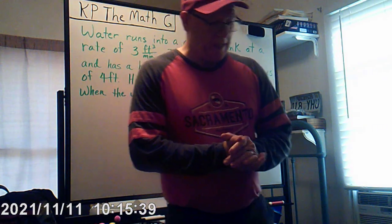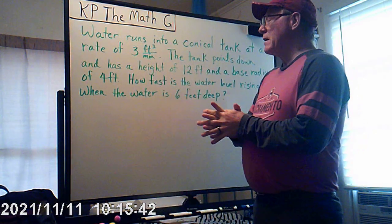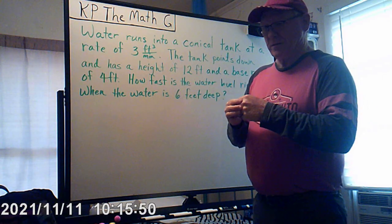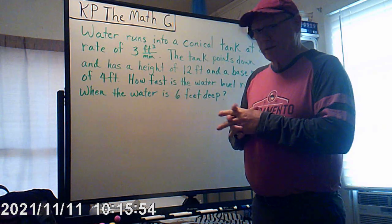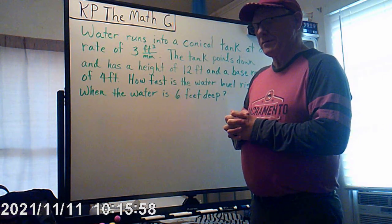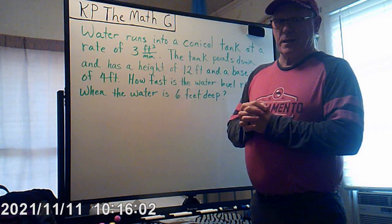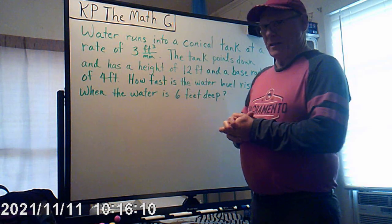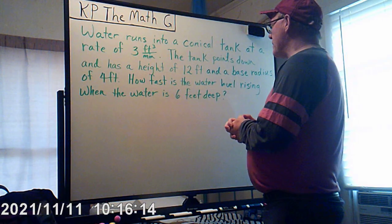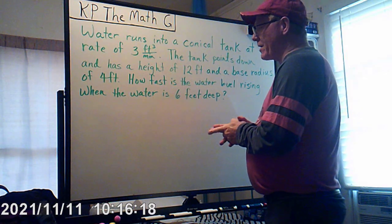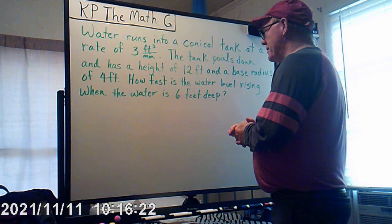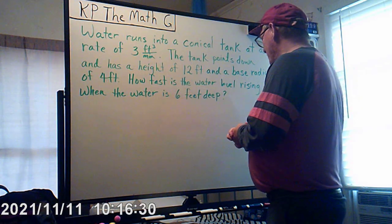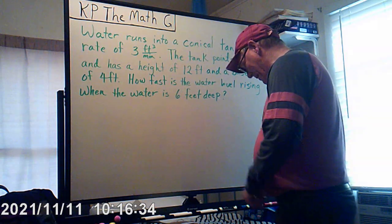Good morning, this is KP the Math G. I want to go back over a problem — my camera card got full and shut me off when I was about three-quarters of the way through, so let's go all the way through it this time. Water runs into a conical tank at a rate of three cubic feet per minute. The tank points down and has a height of 12 feet and a base radius of four feet.